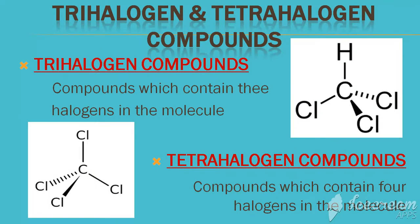Now Trihalogen Compounds are those compounds that have three halogen atoms attached. I have an example of chloroform, CHCl3. If three halogen atoms are attached to one carbon, then it will be a Trihalogen Compound.